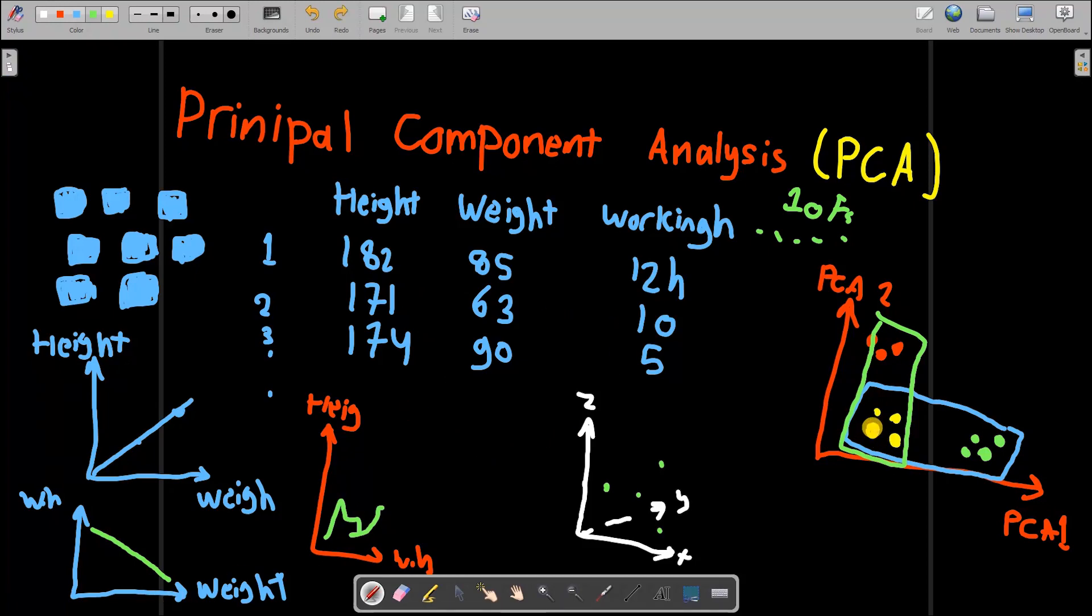If you don't still understand what are these points, those points are nothing but the features. So let's take these three points. Maybe these three points that we have clustered here, one, two, three, are nothing but height, weight, and working hours, and we can see them that they are clustered together.